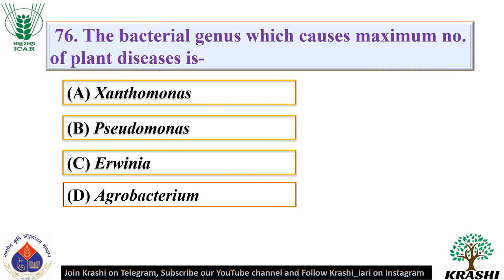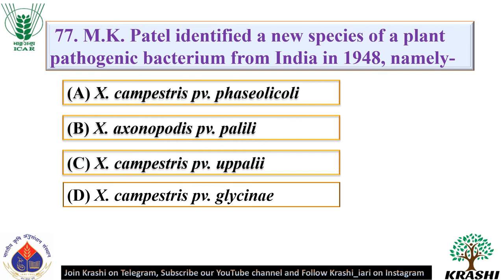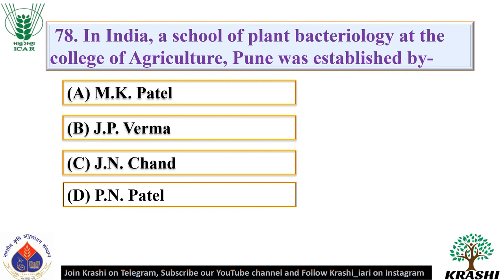Question number 76: The bacterial genus which causes the maximum number of plant diseases is. The correct answer is option B — Pseudomonas. Question number 77: M.K. Patel identified a new species of plant pathogenic bacterium from India in 1948 — it was Xanthomonas campestris pv. upali. Question number 78: In India, a school of plant bacteriology at the College of Agriculture, Pune was established by M.K. Patel.